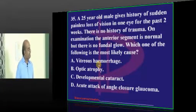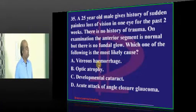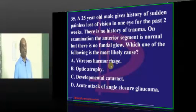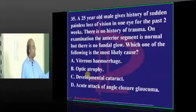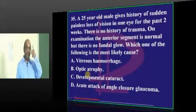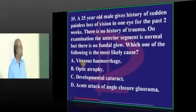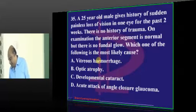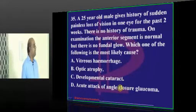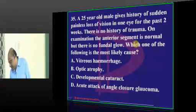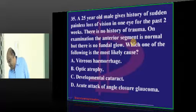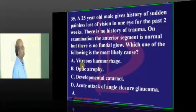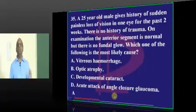Twenty-five-year-old with sudden painless loss of vision, no history of trauma, no fundal glow, and the anterior segment is normal. Dr. Aditi proposes vitreous hemorrhage; Rihant and Thirupati say glaucoma attack; Guntur also says vitreous hemorrhage — which is correct. Without any trauma history, vitreous hemorrhage can spontaneously occur.